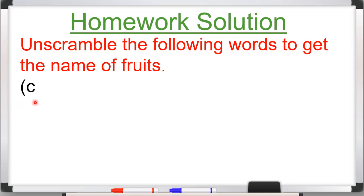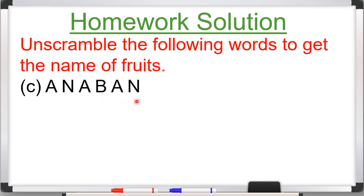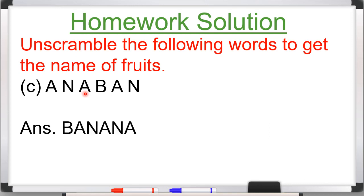Part C: A-N-A-B-A-N. These alphabets are given in jumbled form. You have to arrange them correctly to form a fruit name. Can anybody tell? The answer is Banana. See the picture of banana here.